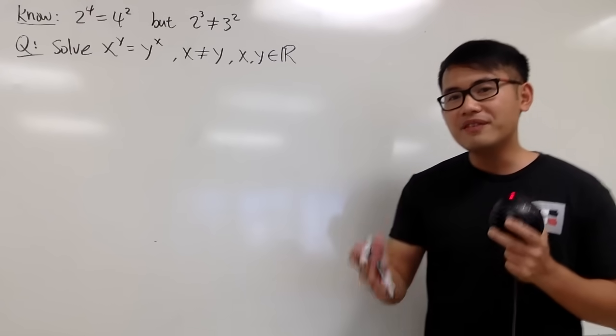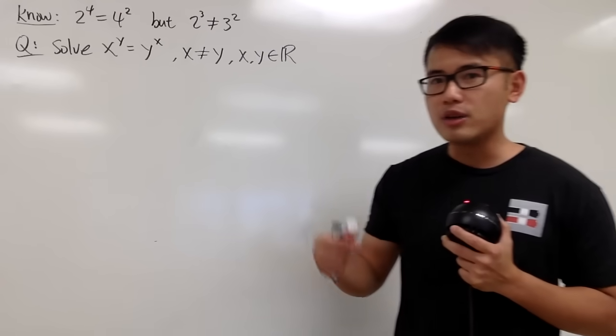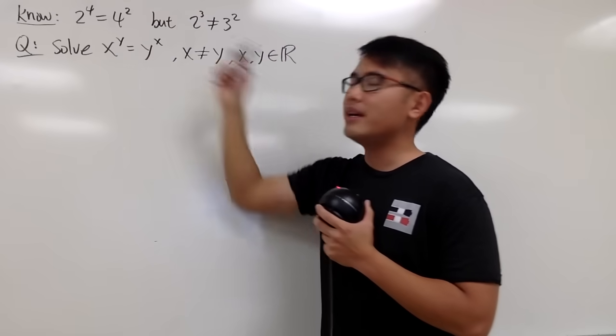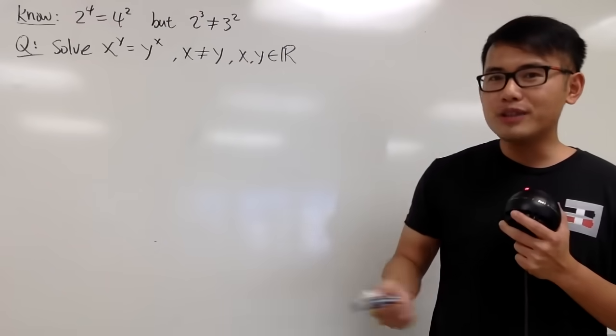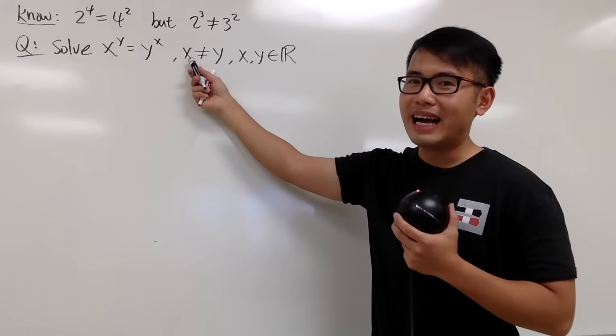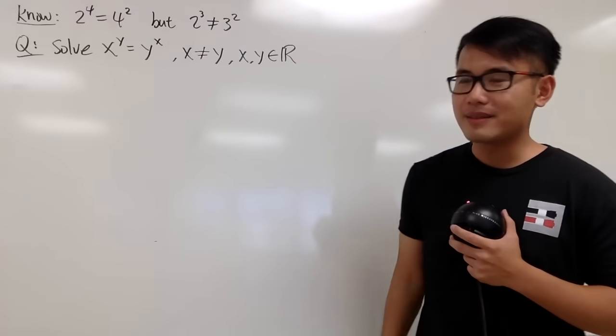But this gives us an interesting question. Is it possible for us to find out more pairs of x and y so that x to the y's power is equal to y to the x power? And to make this even more interesting, let's first assume that we are not going to have x is equal to y, so I'm saying x is not equal to y in this case.